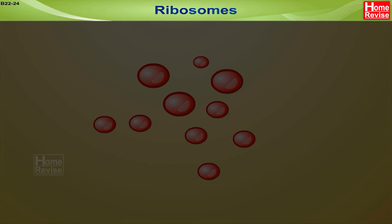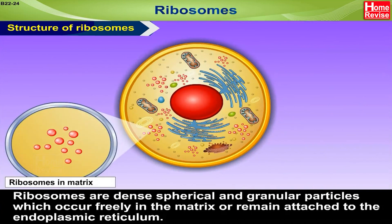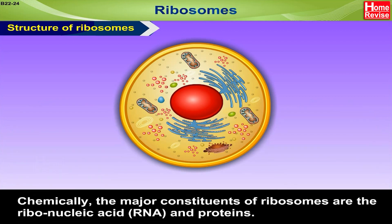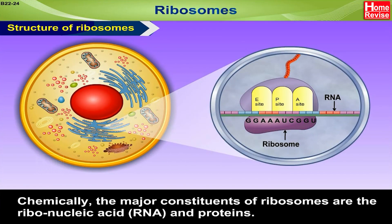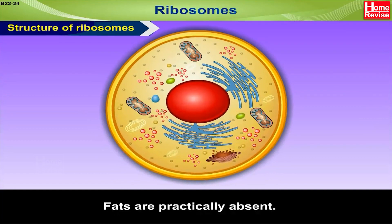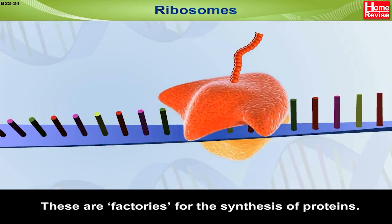Ribosomes. Structure of Ribosomes. Ribosomes are dense, spherical and granular particles which occur freely in the matrix or remain attached to the endoplasmic reticulum. Chemically, the major constituents of ribosomes are ribonucleic acid — RNA — and proteins. Fats are practically absent. These are factories for the synthesis of proteins.